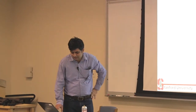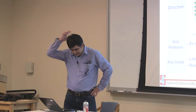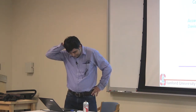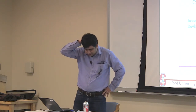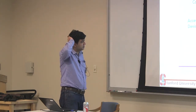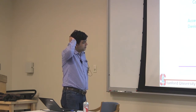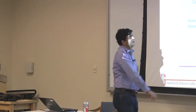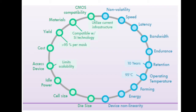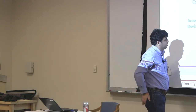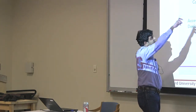I want to end with what I like to call the crystal ball of any memory device. Whenever you have a memory device, you want to look at all these different parameters: how non-volatile is it, if I switch off the power does it retain data, how fast can I read and write into it, what is the maximum bandwidth, what is the endurance, what is the retention time, what's the maximum temperature I can operate at, what is the cell size, and is it CMOS compatible — especially if it's an embedded memory?